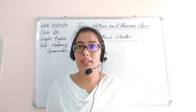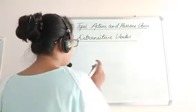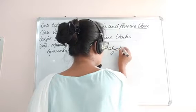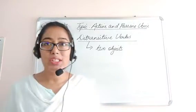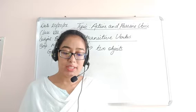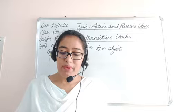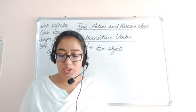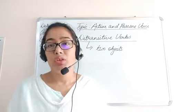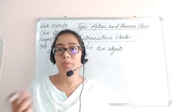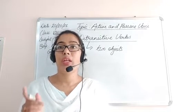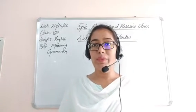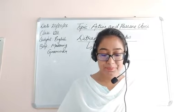A ditransitive verb is a verb in which there are two objects. So far it has been discussed that a sentence may be changed into passive voice when the transitive verb has only one object. When a transitive verb has two objects, there are two possible ways of converting the sentence into passive voice.